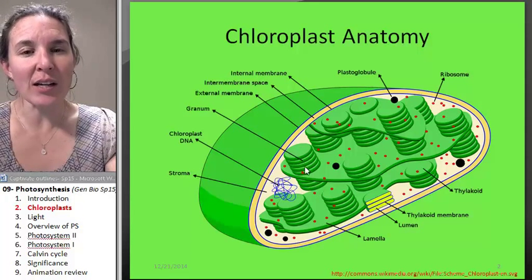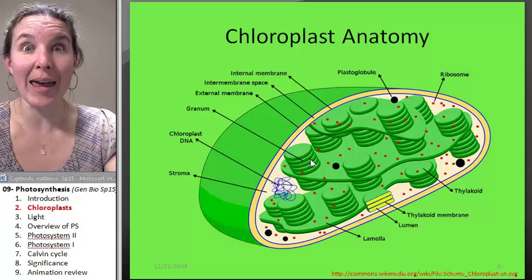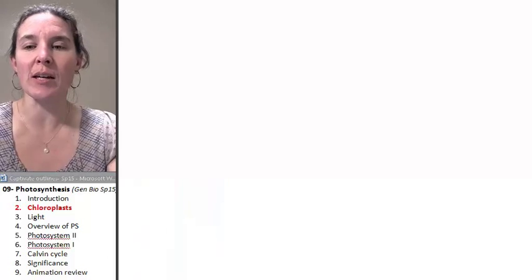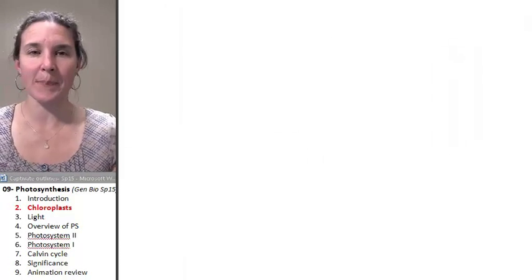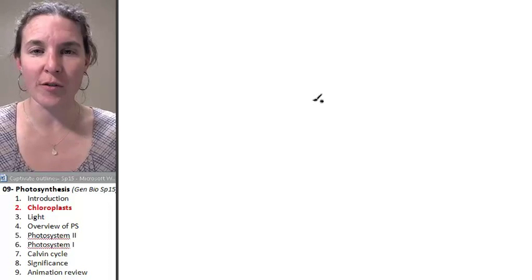The key structures that we're going to look at here are these flattened stacks of pancakes inside the chloroplast. So let's draw a picture because that's how my brain works. And we'll label the parts that are important for you to know.